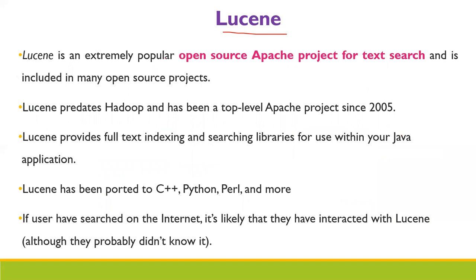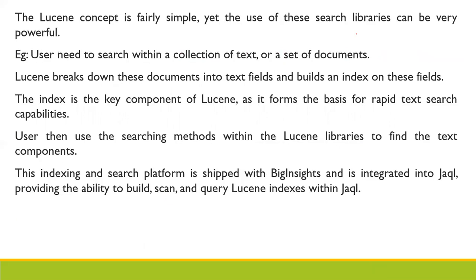The next component is Lucene. It is an extremely popular open source Apache project for text search, included in many open source projects. It predates Hadoop and has been a top-level Apache project since 2005. It provides full-text indexing and searching libraries for use within Java applications. It has also been ported to C++, Python, and Perl. Indexing is a key component of Lucene because it forms the basis for rapid text search capability.